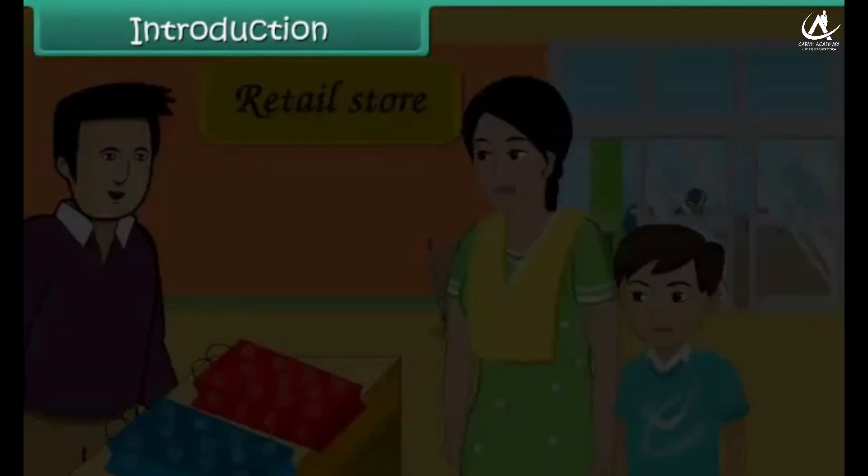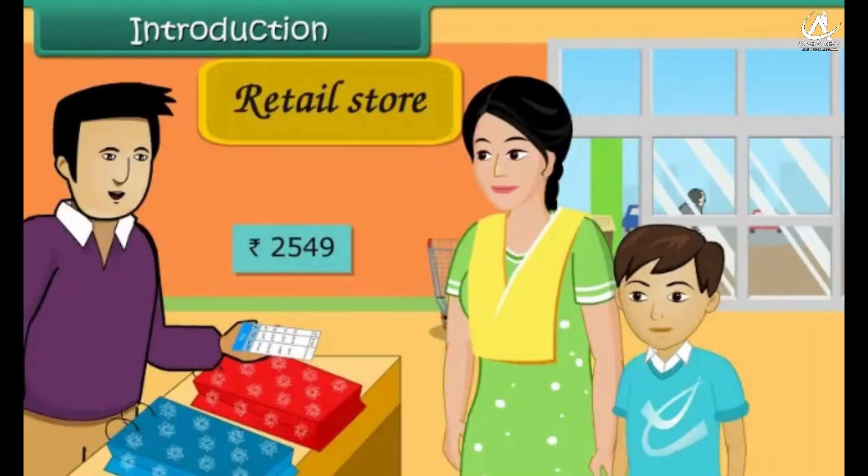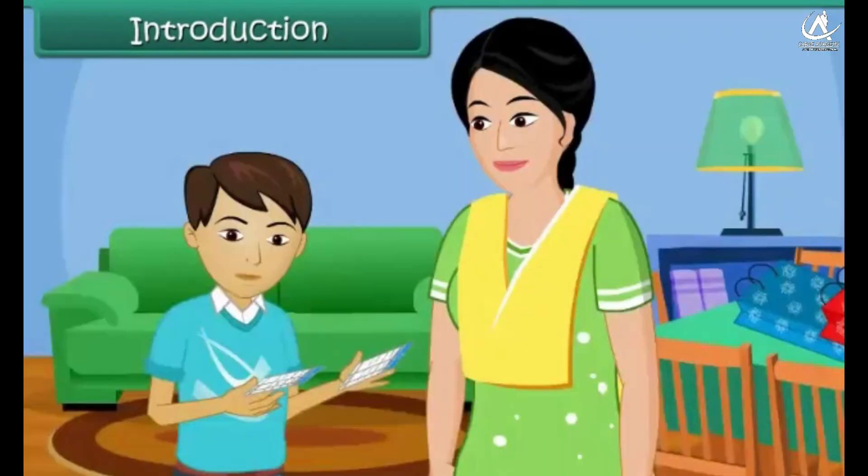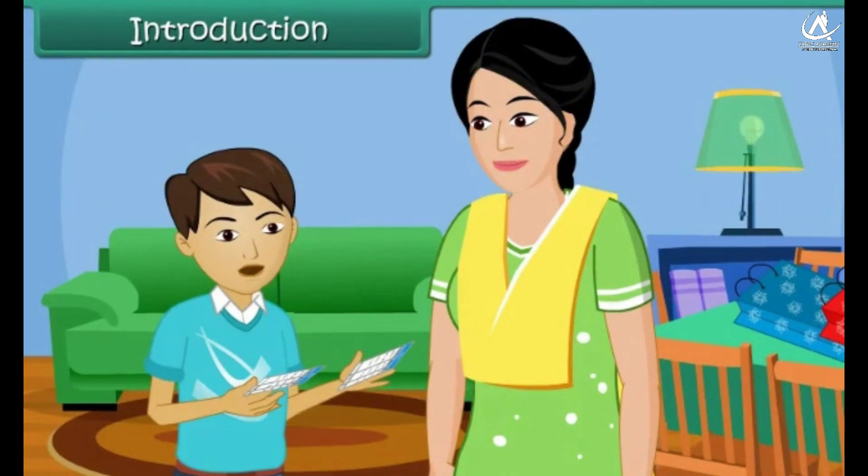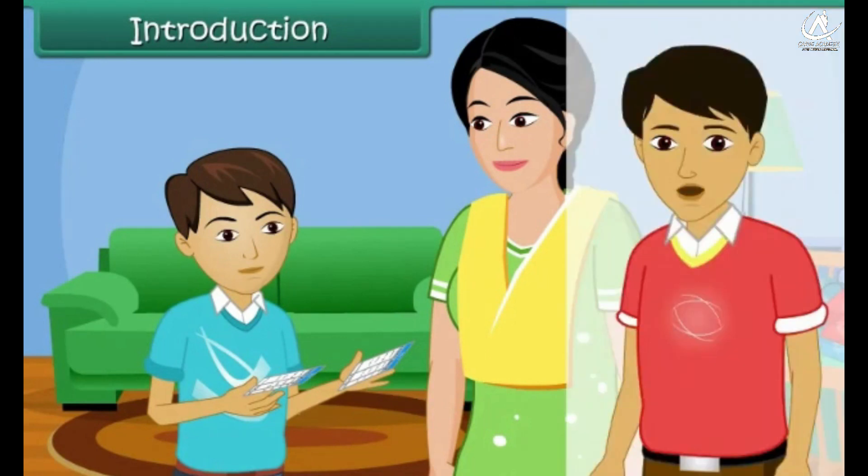Anuj bought two shirts for rupees 2,549. Her mother bought some grocery items and the bill amounted to rupees 2,350. At home, he compared the total amount of the two bills. He told that his shirt's cost was more than all the grocery items. How was he able to tell? Well, it was because he learned about large numbers.